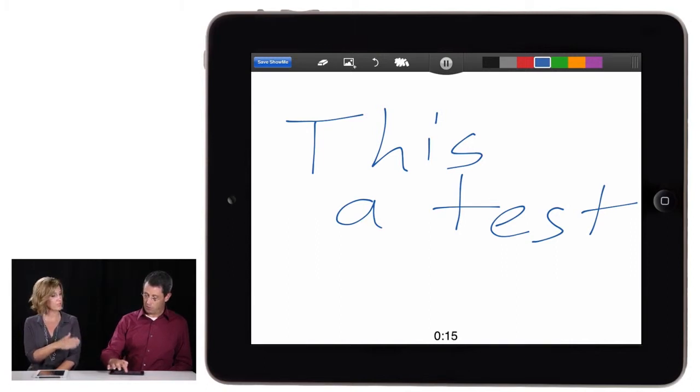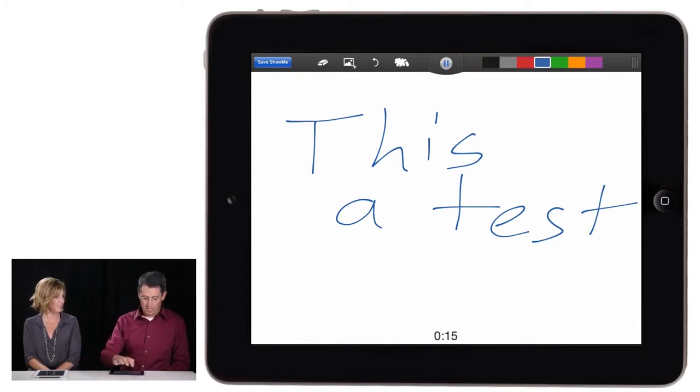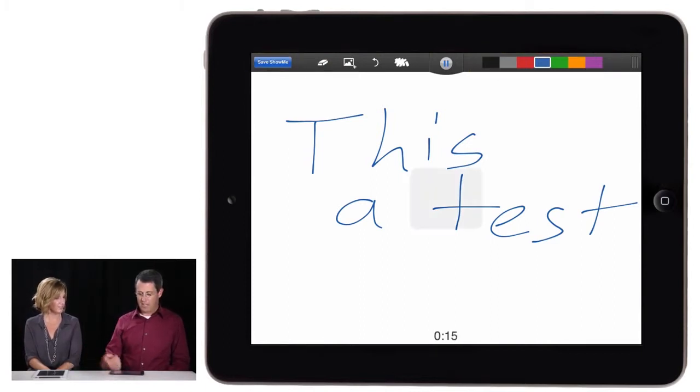And real quick, Rich, this is capturing our voice if we're recording. Yes, it is. So that in the voice explanation, it's in the background and you have the visual part too. That's right. And I can easily insert pictures using the icon along the top on the left hand side there. I can erase different things. I can use different colors. But let's save this here. A thousand different uses for this. This is great.